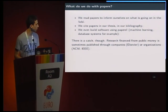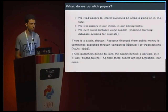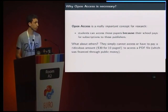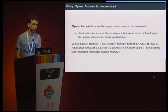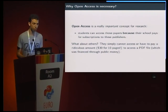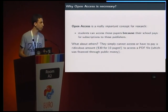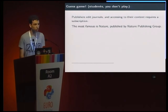But there is a catch. Research is financed from public money and published through companies like Elsevier or organizations like ACM or IEEE. And this publisher decides to keep the papers behind the paywall, so you have to pay for it — this is kind of closed source. But it creates a problem. Open access is really important because people who are not students cannot access the paper and have to pay a ridiculous amount of money for only 10 pages, which is not really fair.